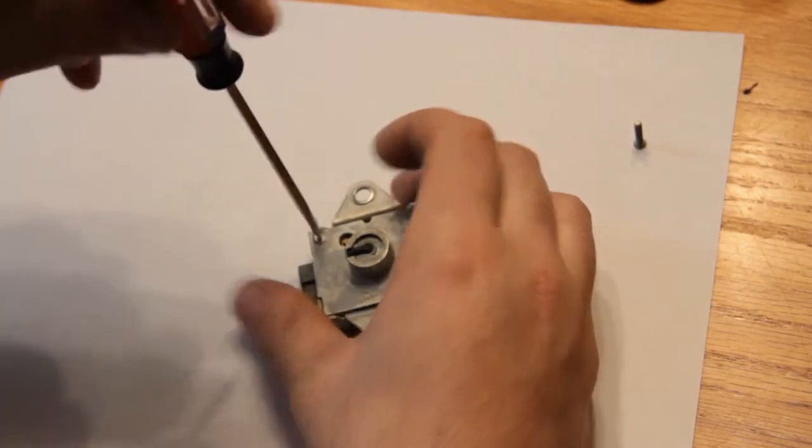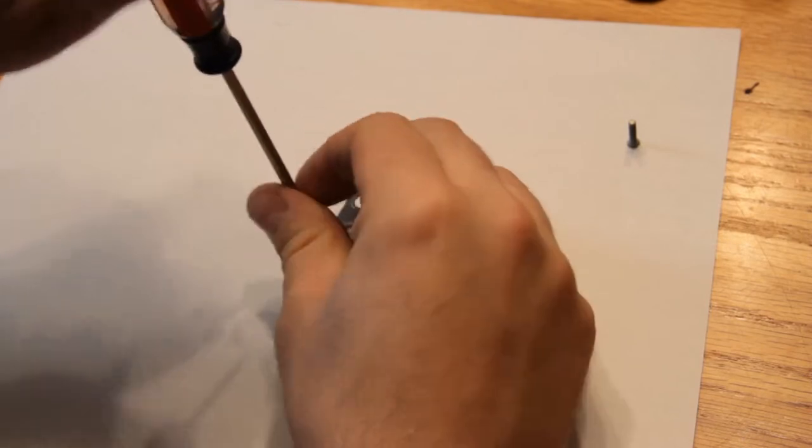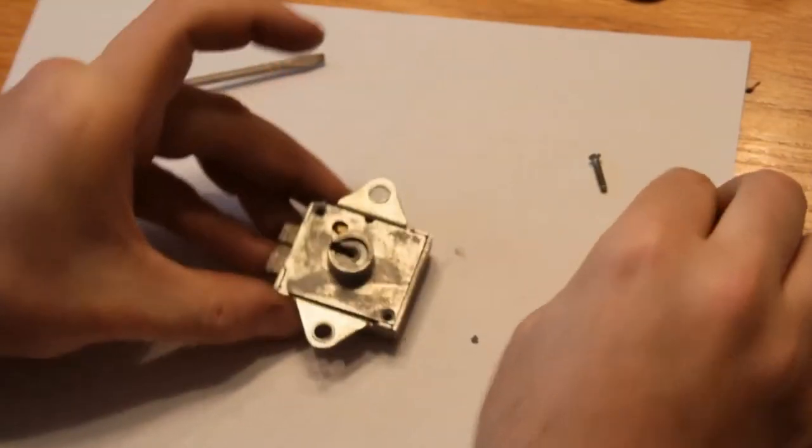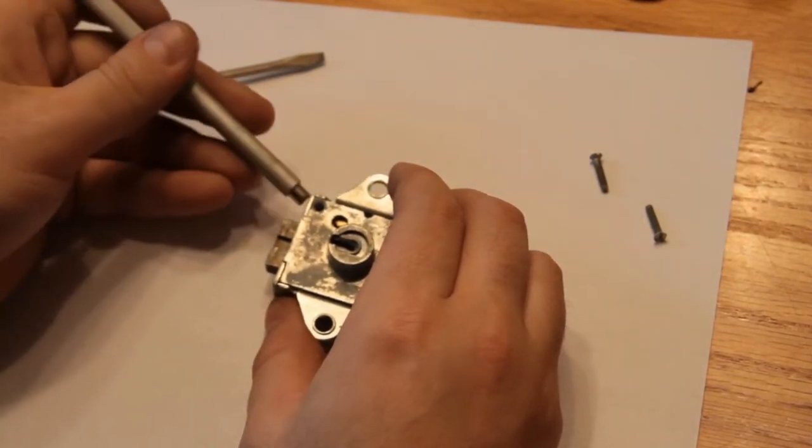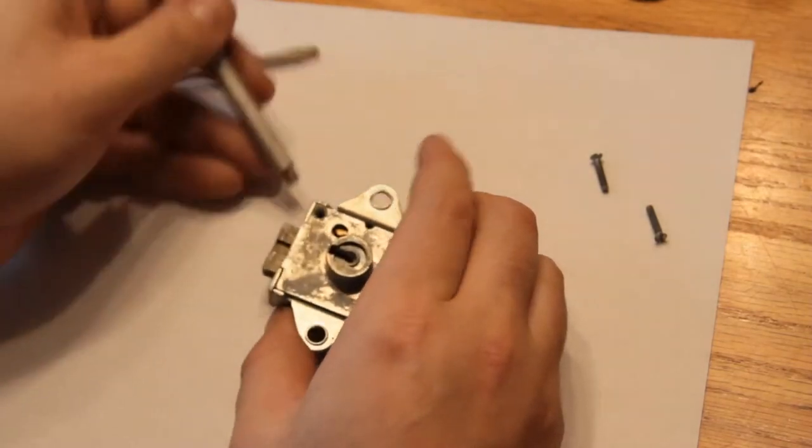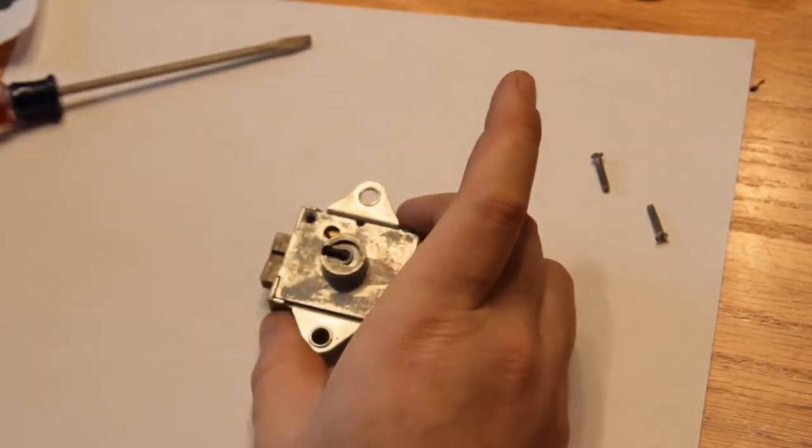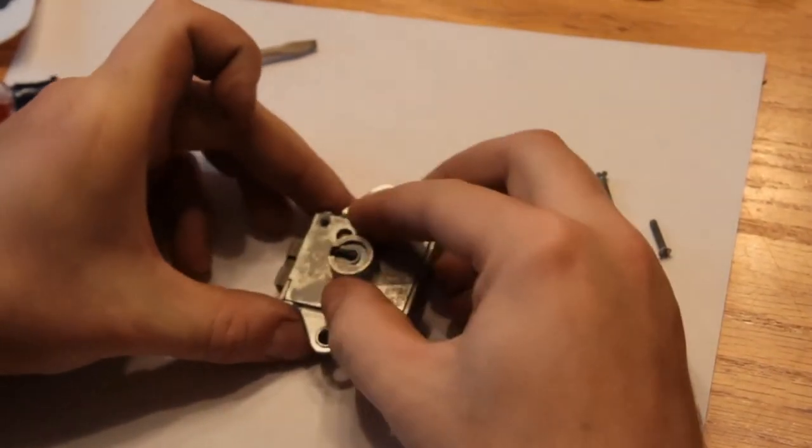The body of this lock, in contrast to the S&G, which is cast zinc alloy or something, the body of this is stamped sheet metal and is made of steel. At least the sides are. The bolt is not and the top is not, but the back is stamped steel. Kind of neat.